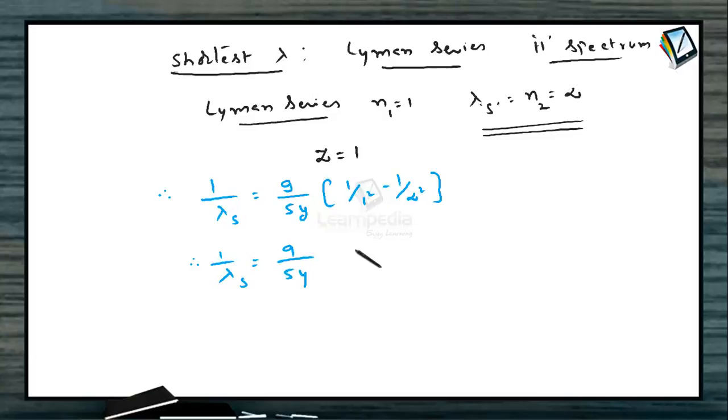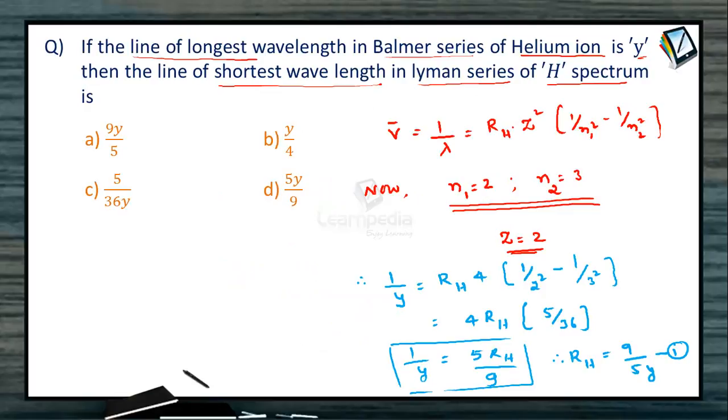So this is 1 itself. So lambda S, the wavelength corresponding to the line of shortest wavelength, lambda S is equal to 5Y by 9. Now let us check the options. So we have 5Y by 9. This is 9Y by 5. This is Y by 4. 5 by 36Y. And here is the 5Y by 9. So D is the answer.